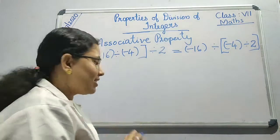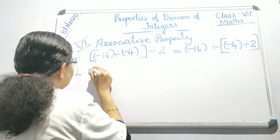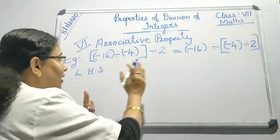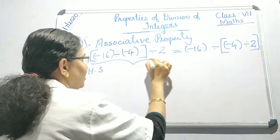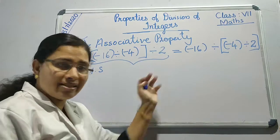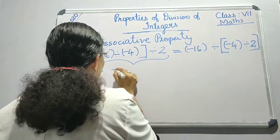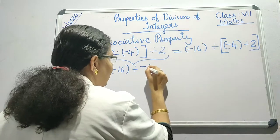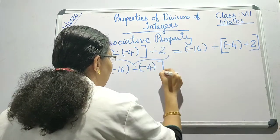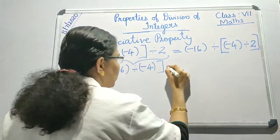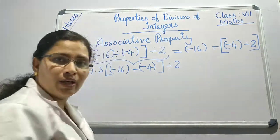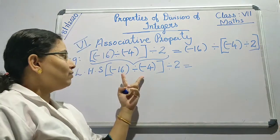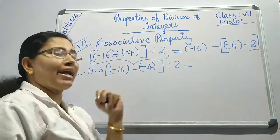Let us take the left hand side. The left hand side is: minus 16 divided by minus 4, the whole bracket divided by 2. So first I have to solve the bracket.